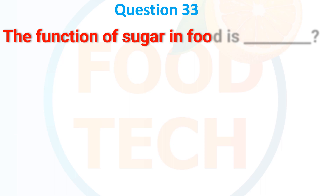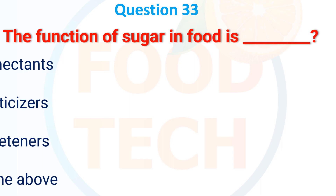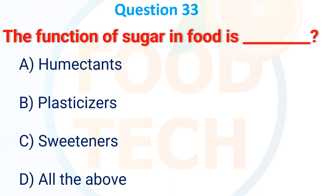The function of sugar in food is: A. Humectant, B. Plasticizer, C. Sweetener, D. All of the options. The answer is D. All of the options.